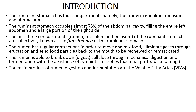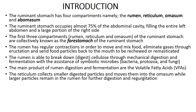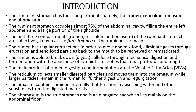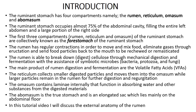The main products of rumen digestion and fermentation are the volatile fatty acids, or VFAs. The reticulum collects smaller digested particles and moves these into the omasum, while the larger particles remain in the rumen for further digestion and regurgitation. The omasum contains laminae on its internal surface, which function in absorbing water and other substances from the digested materials. The abomasum is the true stomach, resembling more or less the stomach of the monogastric animal, and is an elongated sac which lies mainly on the ventral abdominal wall.